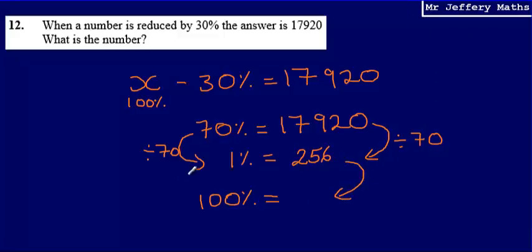And then all that's left for me to do to get from 1% up to 100% is to multiply by 100. So I'm going to do 256 multiplied by 100 and that's going to give me an answer of 25,600. So final answer: 25,600.